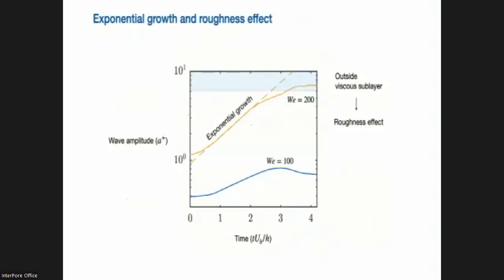So we can also look at the amplitude, of course, and we see there's exponential growth of these waves, which tells us there's some sort of linear stability going on here. And in particular, these waves grow so large in terms of amplitude, so they exceed outside of the viscous sub layer of the turbulent flow, basically creating a roughness effect and therefore also increasing the turbulent friction drag.